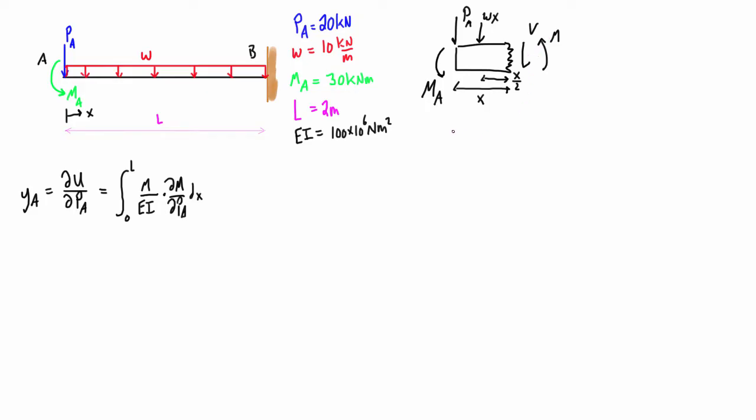Okay, so if we go and sum up the vertical forces, we're going to get basically v plus Pa plus wx is all equal to 0. So we're going to find that the internal shear is equal to negative Pa minus wx, or really what it is, it's equal to Pa plus wx going in the upwards direction.